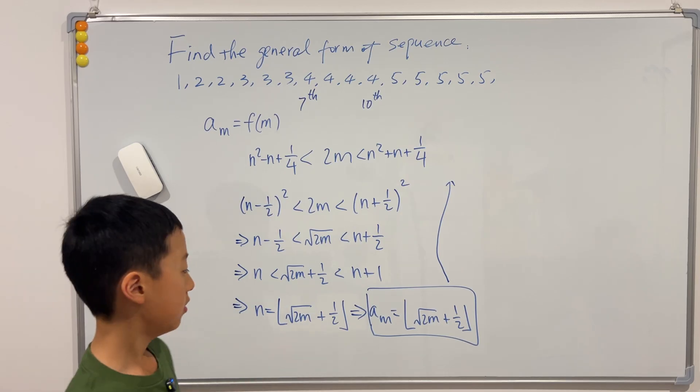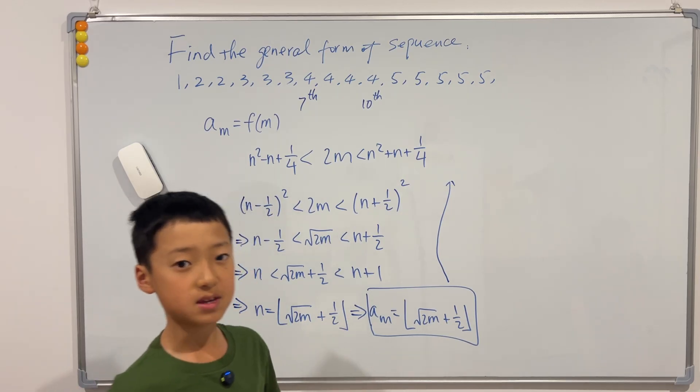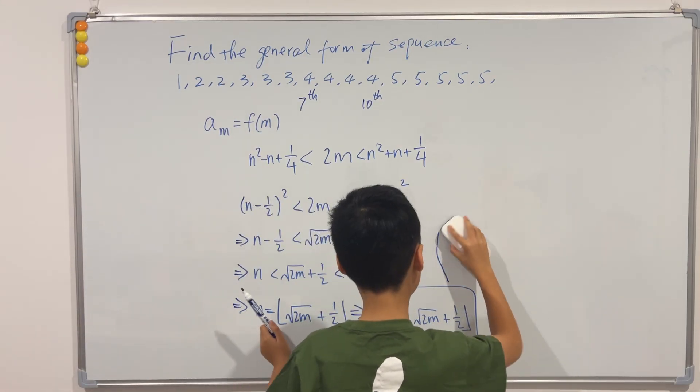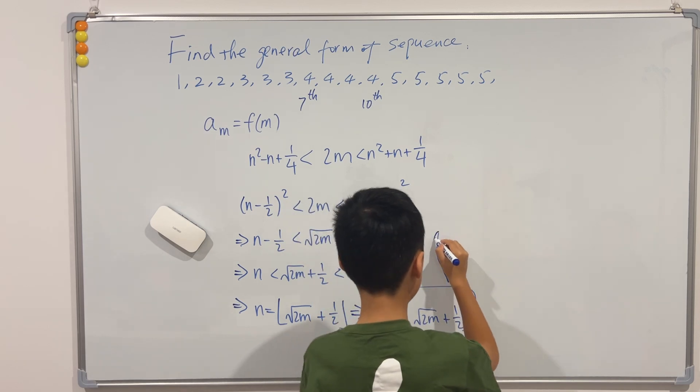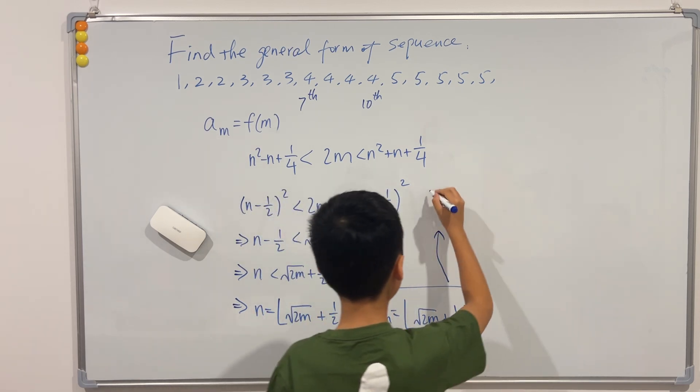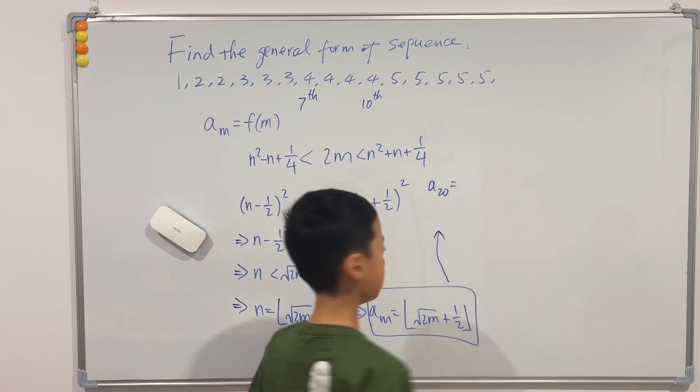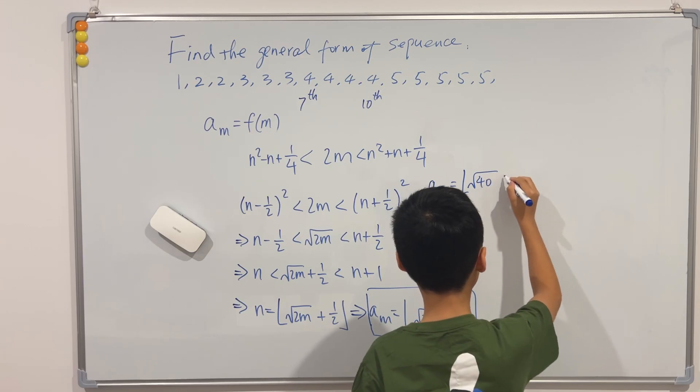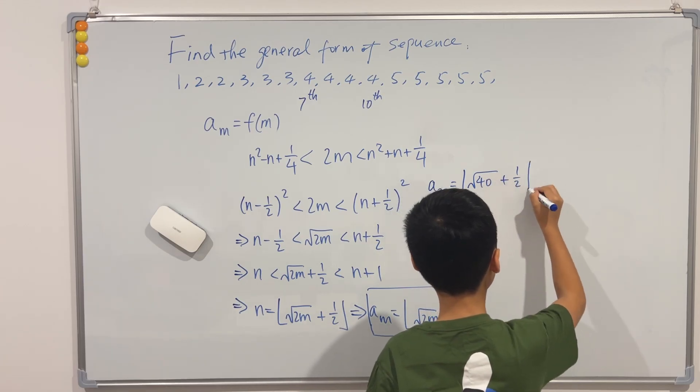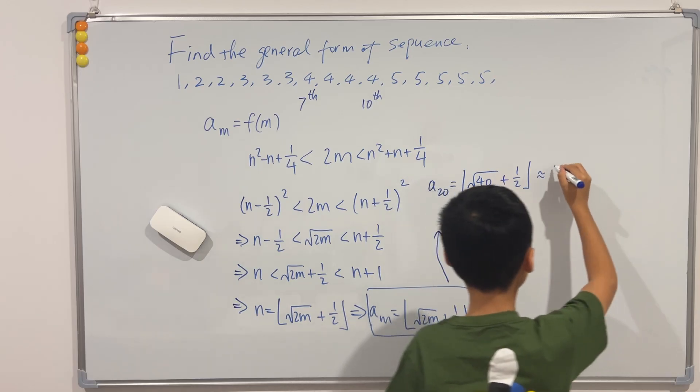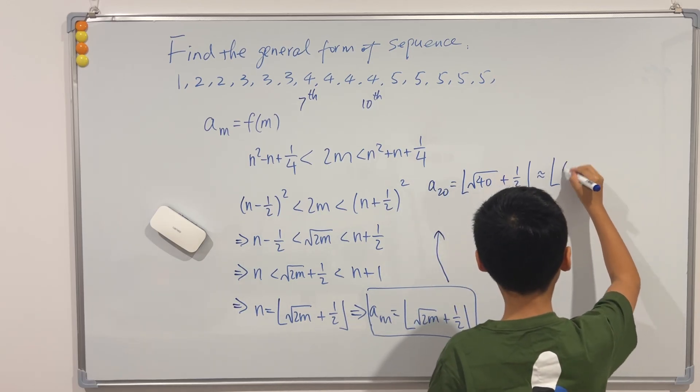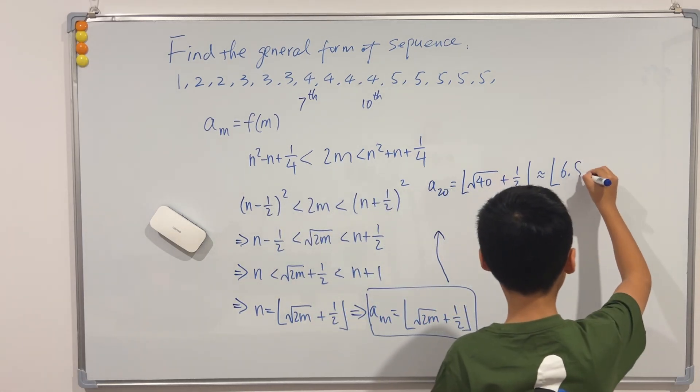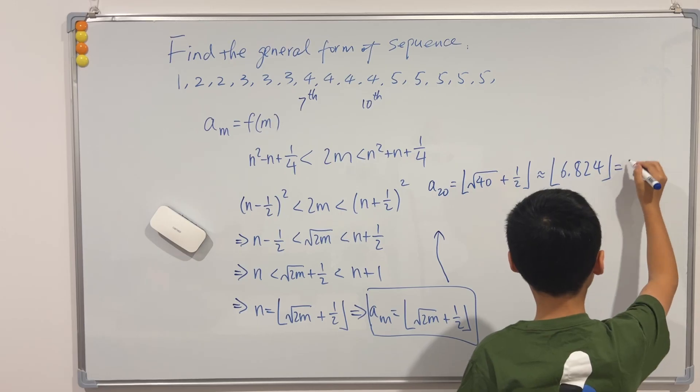So let's first test a of 20, which is equal to the floor function of square root of 40 plus one half, which is approximately equal to the floor function of 6.824, which is equal to 6.